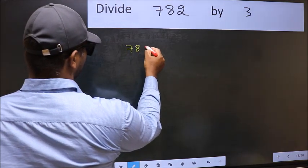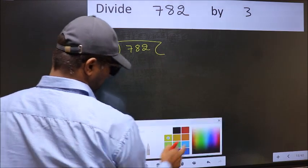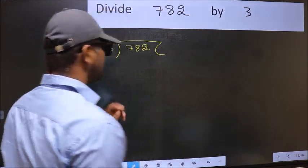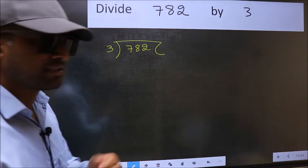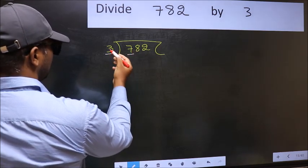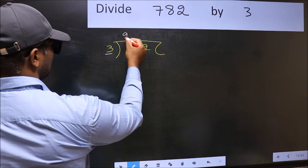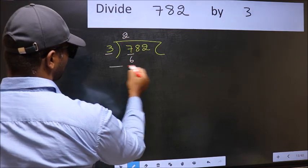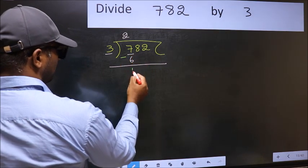782 and 3 here. This is your step 1. Next, here we have 7 and here 3. A number close to 7 in 3 table is 3 times 2, which is 6. Now you should subtract. 7 minus 6 is 1.